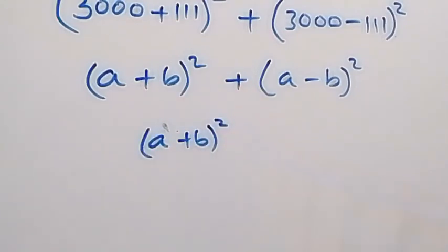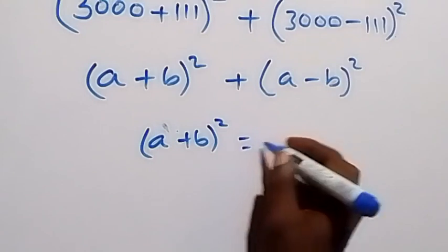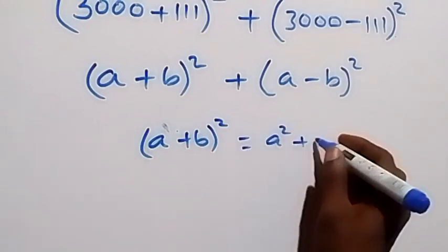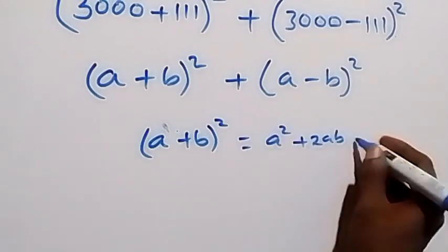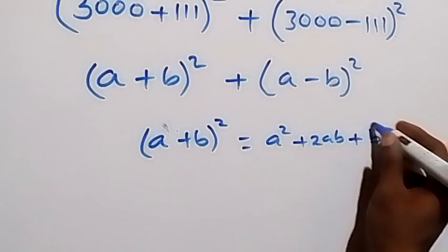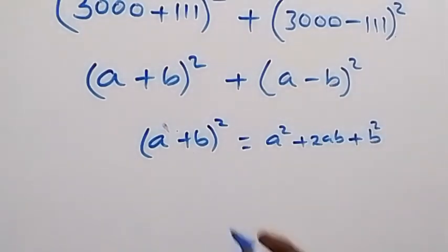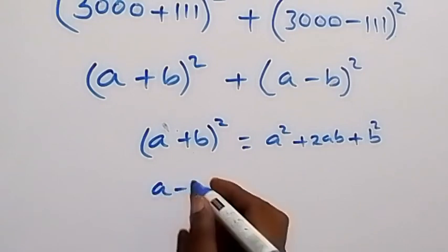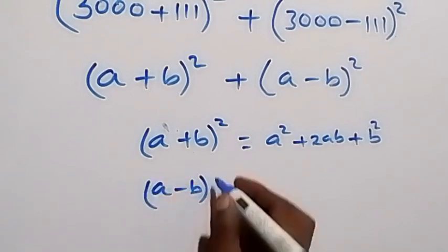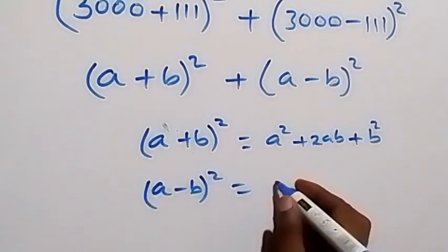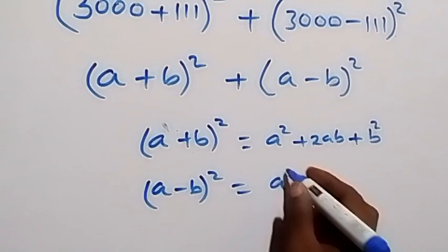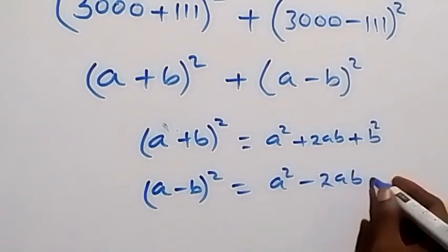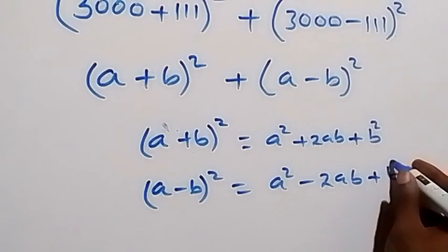The expansion of (a plus b) all squared will be a squared plus 2ab plus b squared. And also the expansion of (a minus b) all squared, when we expand this, gives us a squared minus 2ab plus b squared.